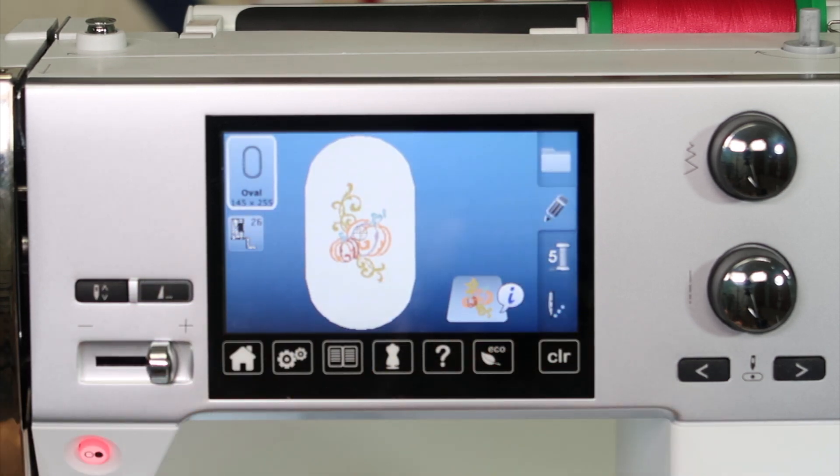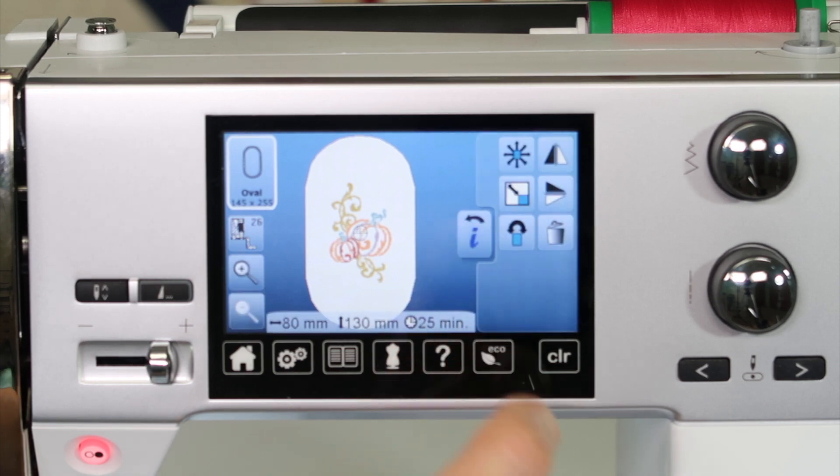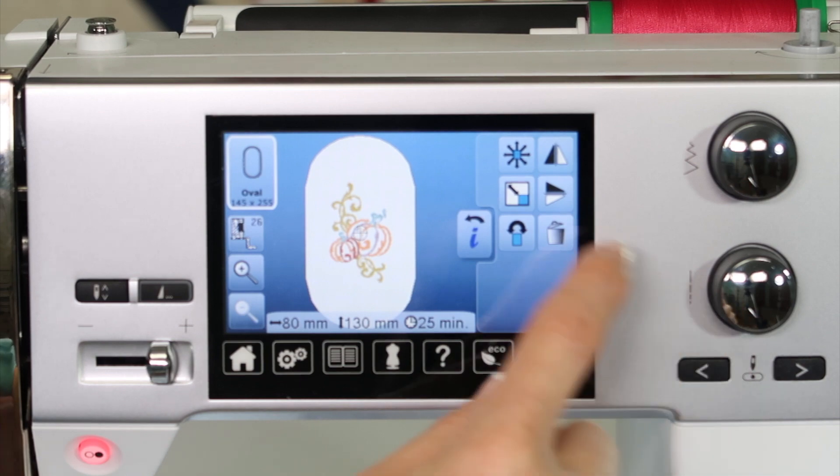Over here, you'll notice you don't have a lot of functions showing, but if you touch the little lower case I next to the design, this is where you can size designs, move your design, rotate and mirror image, or just trash, as in clear the screen.